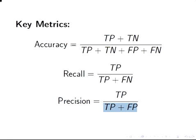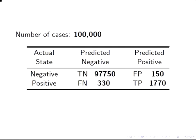Let's use this dataset. We have 100,000 cases: 97,750 true negatives, 1,770 true positives, 150 false positives, and 330 false negatives.